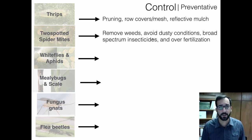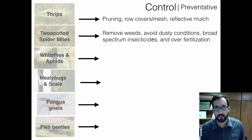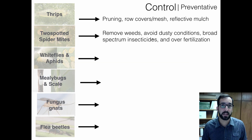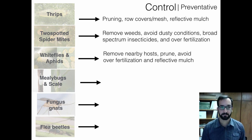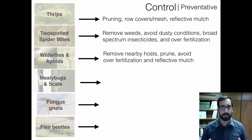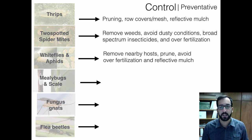Also avoid over-fertilization — some studies have shown you can reduce the recommended fertilizer rate by 50% and still get the same flower growth but greatly reduce spider mite populations, because excess nitrogen really feeds these insects. For whiteflies and aphids, remove nearby hosts — including outside the greenhouse. If there are ants, they can just bring aphids in. Remove weeds, especially if you see any signs of aphids or whiteflies on them.